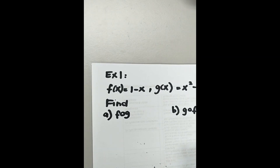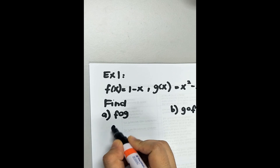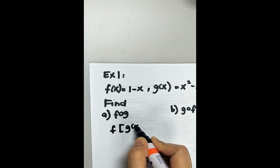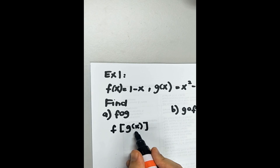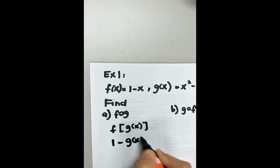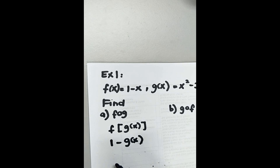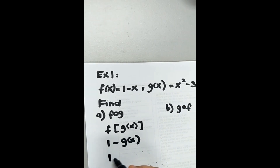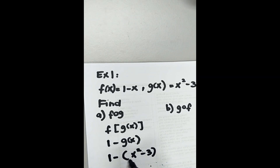We proceed to question f composite g. f composite g is f of g(x). You have to substitute g into f. What is your function f? 1 minus x. So, 1 minus g(x). What is your g(x)? x squared minus 3. So, 1 minus (x squared minus 3). We put the bracket because the negative applies to both terms: 1 minus x squared plus 3. So the answer is 4 minus x squared.